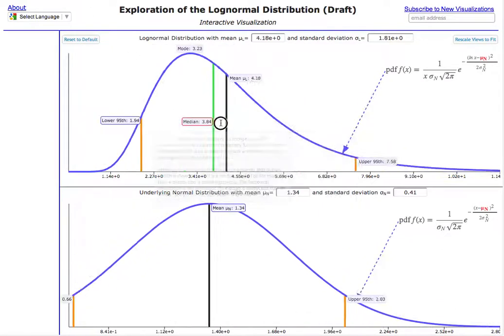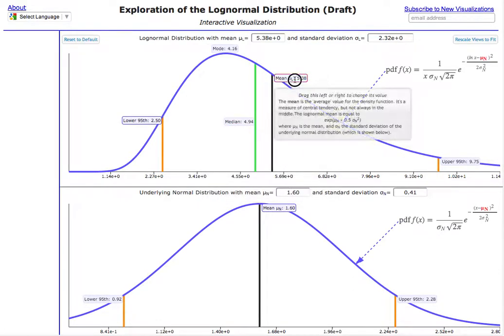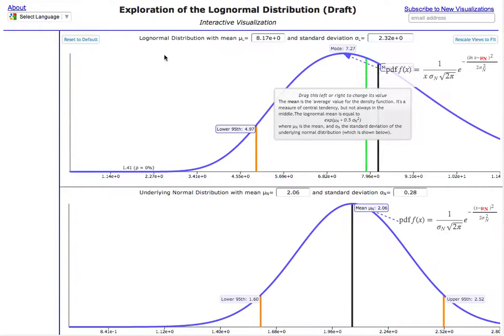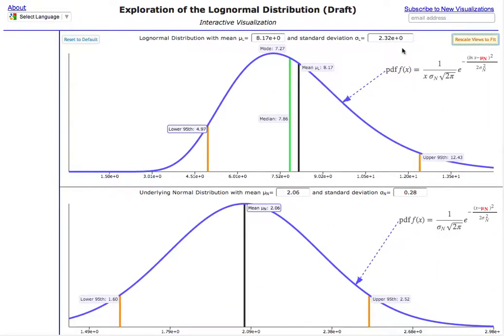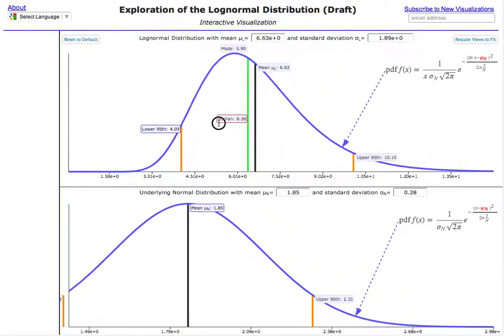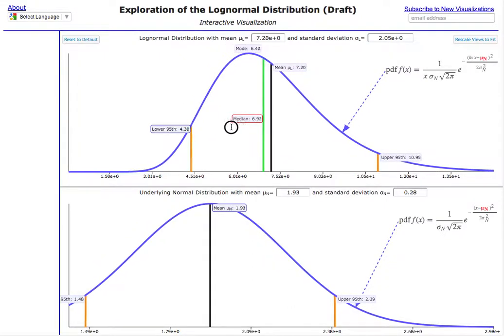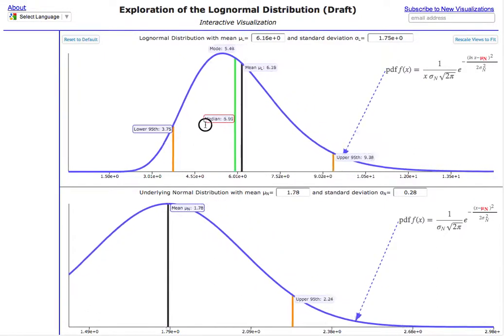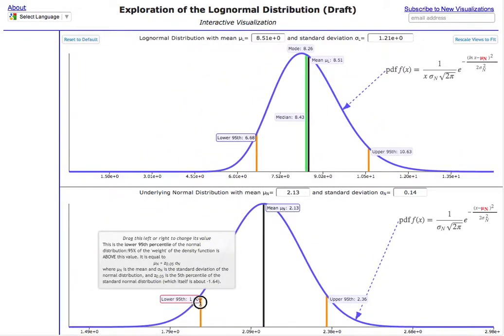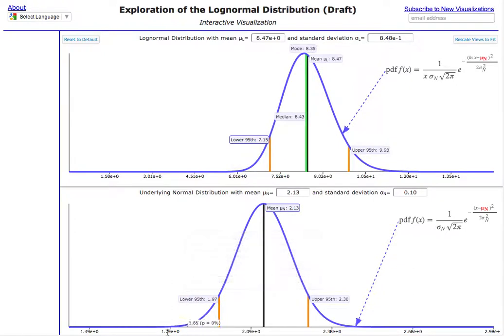So you can kind of move it around, do some stuff. If the curve gets too far out here, you can tell it to rescale the views to fit them in because I could change the scale on the fly, but I decided not to because I wanted to be able to preserve or make it easier to see how the changes you're making are impacting the curve. Otherwise, you might not see any difference if I was scaling the x-axis here as you went.